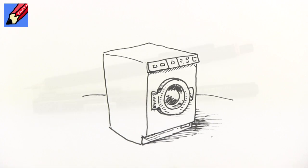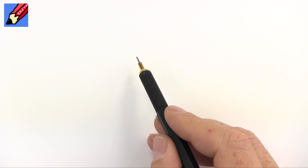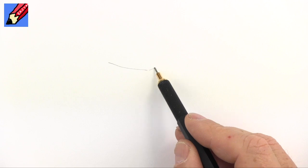How to draw a washing machine. Real easy. To draw a washing machine it's basically a box.